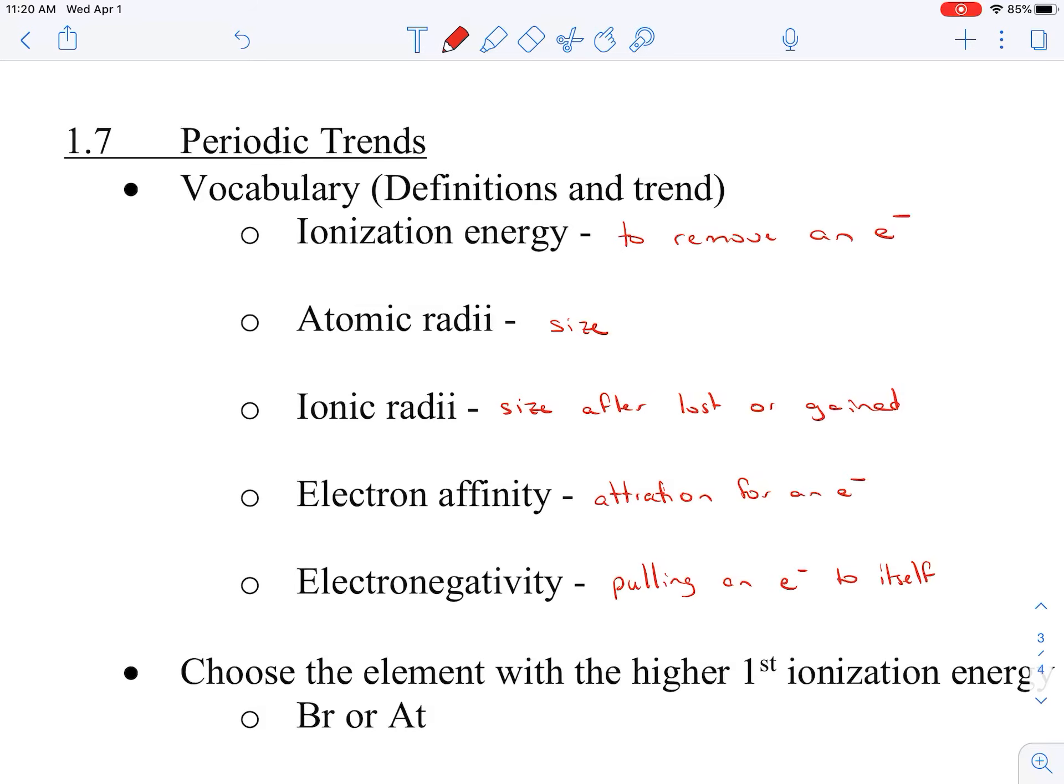Going back and hitting the trends, ionization energy tends to increase as you go to the right and up. The reason for that, as we move to the right, what are we adding? More protons. So we're adding more protons as we move to the right. As we move up, we have less shielding.